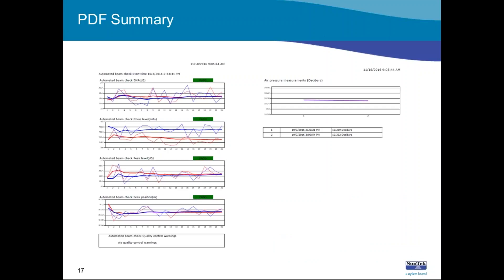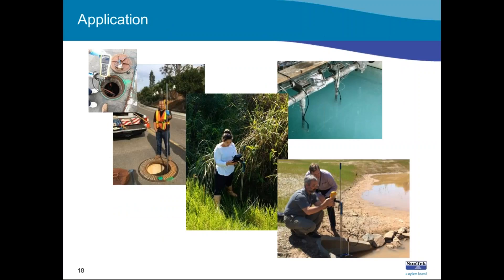A PDF discharge measurement summary comes out of the FlowTracker 2 software. All of this data is packaged in a nice PDF report with graphics, including the beam check shown on the left-hand side. The beam check monitors the health of the instrument — whether your signal strength is adequate and signal characteristics are adequate — providing a further QC check. Now that we have a pressure sensor, we can show pressure data in graphical form as well, with the pressure summary on the right-hand side. That measurement that was taken did change over the course of the measurement, so this isn't just theory.